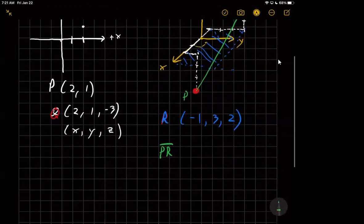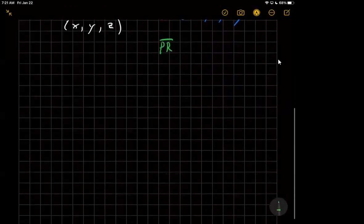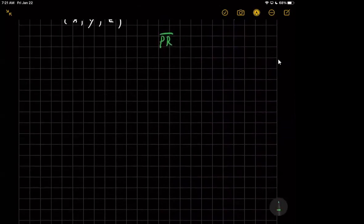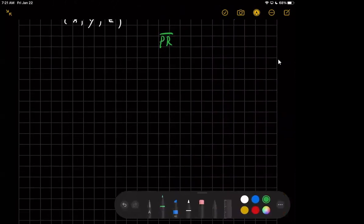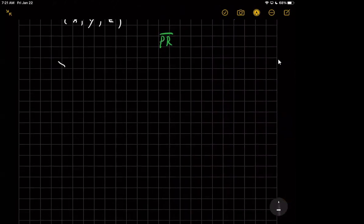So continuing on, those are points in a 3D plane. I want to go over something else here. What would the following look like? I want to look at what does x equal 2 look like in 2D versus 3D.